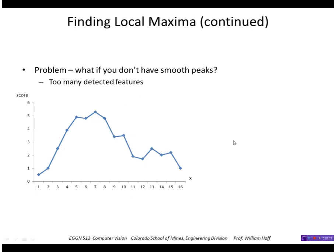The problem is, what if you don't have smooth peaks? Then you get too many detected features. So here I would pick up a peak here, a peak here, a peak here, here, and here.